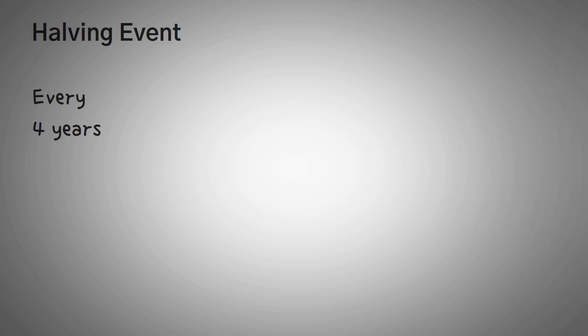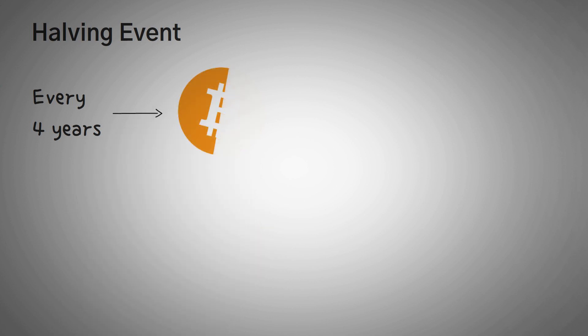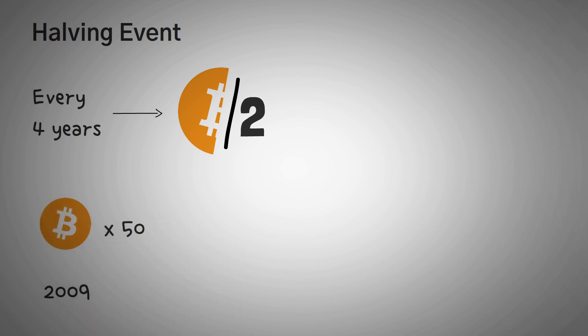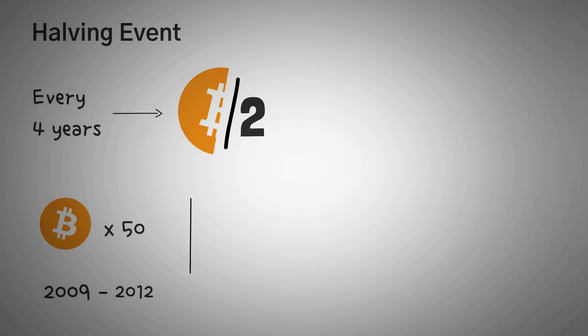Every four years, the amount of Bitcoins that are given out as a reward is cut in half. So in 2009, the rewards of solving a Bitcoin block was 50 Bitcoins. Actually, all the way from 2009 to 2012, the block reward was 50.